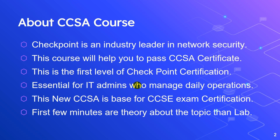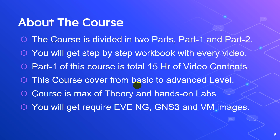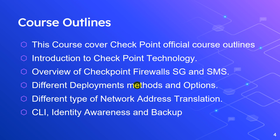The first few minutes of each video are theory about the topic, and then we do a lab. This course is divided into two parts — Part One and Part Two. You will get a step-by-step workbook with every video. Part One is almost 15 to 16 hours of video content with workbook images, covering basic to advanced level with a mix of theory and hands-on labs. You will also get EVE-NG images, GNS3 images, and VM images if required.